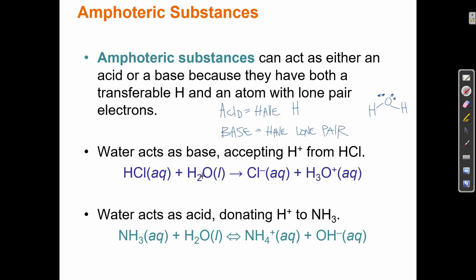Water acts as a base here: it takes the H and becomes H3O+. Here water acts as an acid: it loses an H and becomes OH−. So water can go from H2O to H3O+, or from H2O to OH−. Water exists in the middle of these two species — depending on whether you add an acid or a base to water, it could do either.